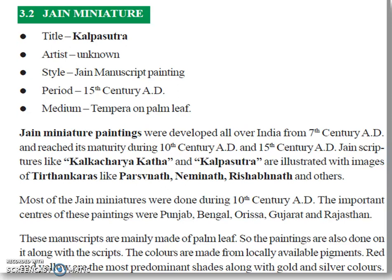Jain Miniature Paintings were developed all over India from 7th century AD and reached their maturity during 10th century AD and 15th century AD. Jain scriptures like Kalkachary Katha and Kalpasutra are illustrated with images of Tirthankaras like Pashvanath, Neminath, and Rishavanath.